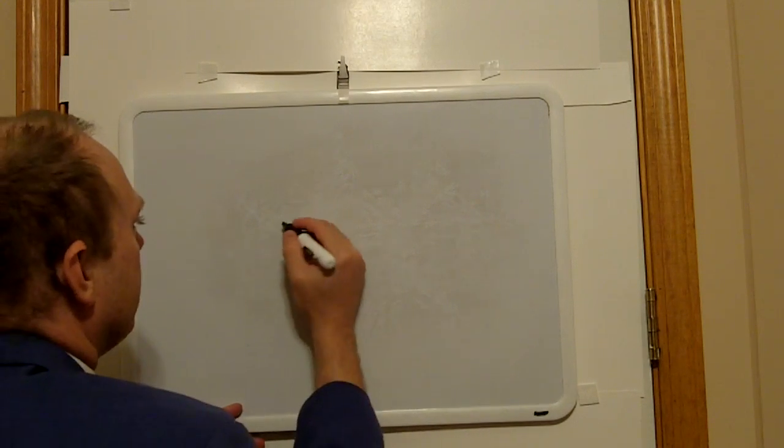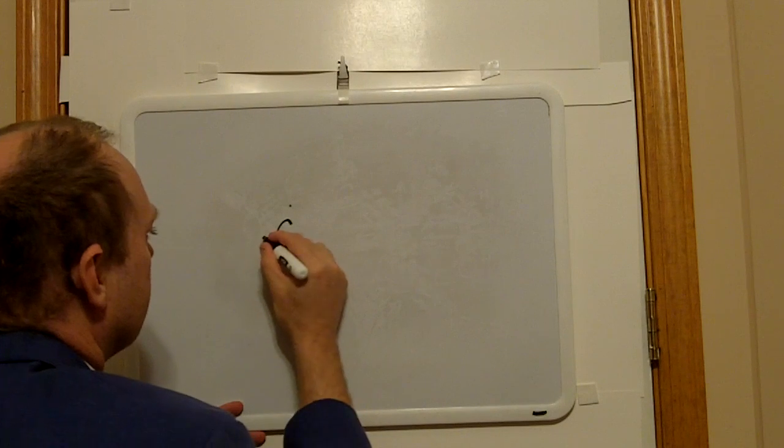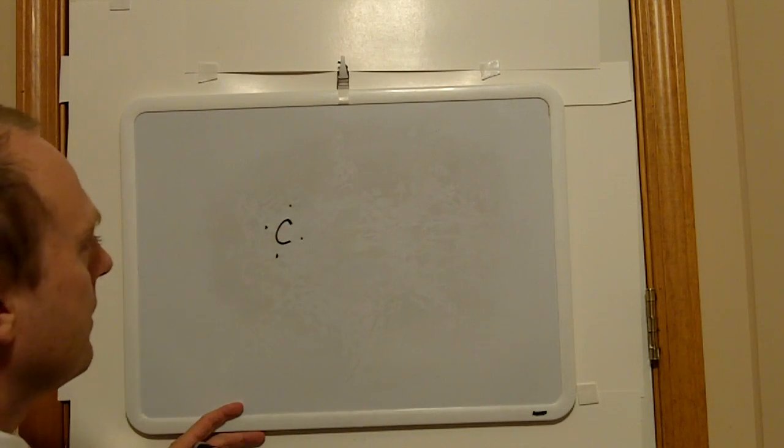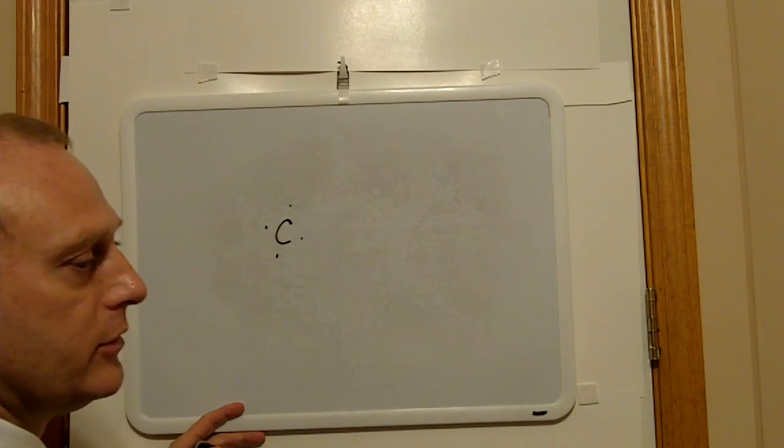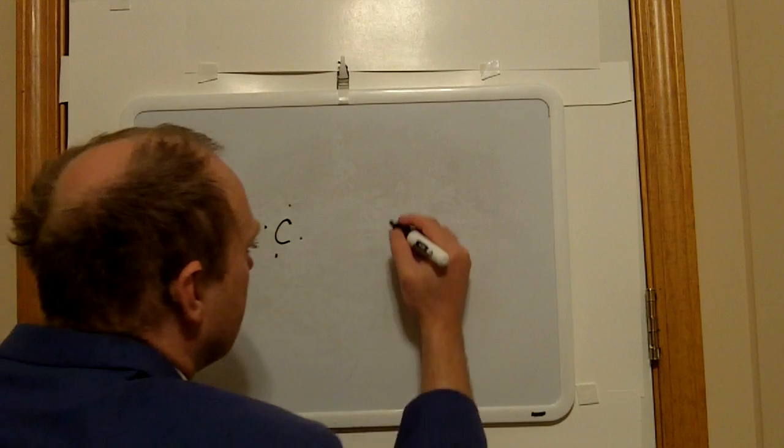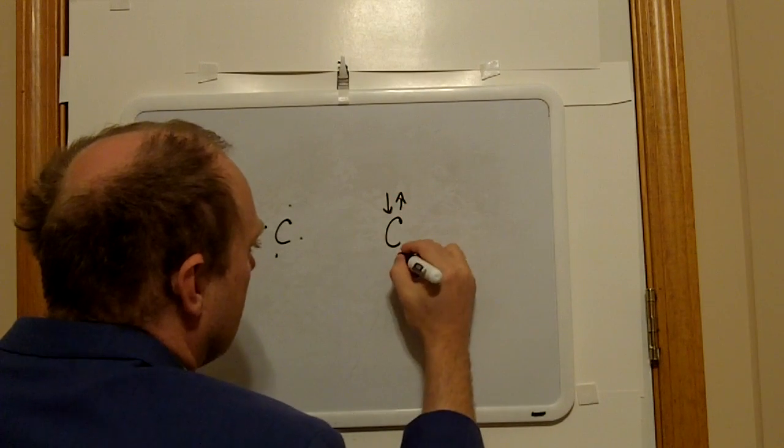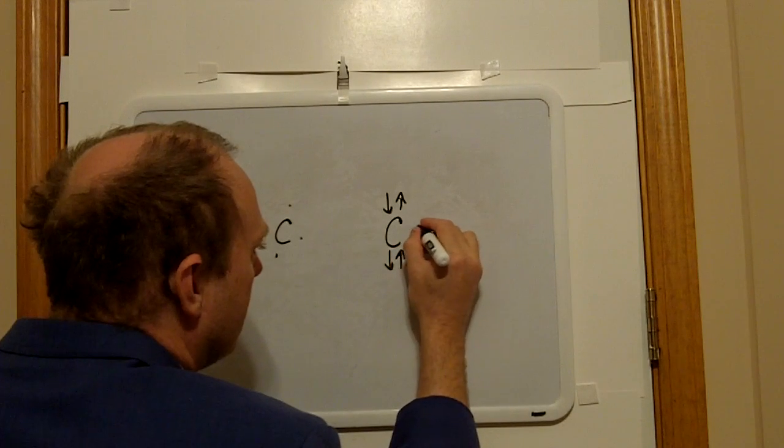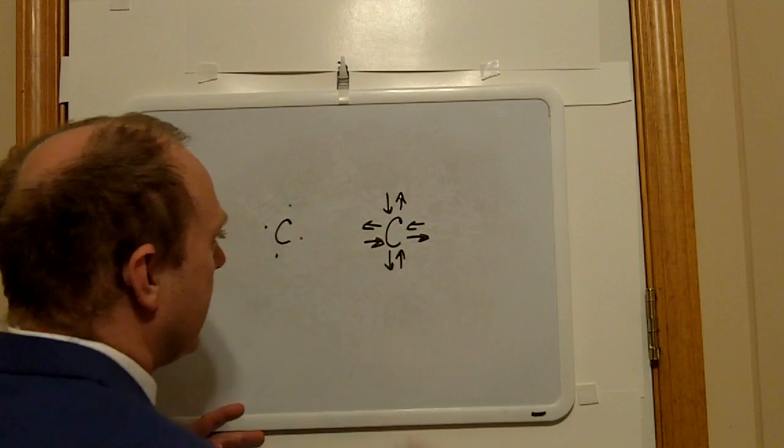Lewis structures represent carbon this way, with an electron dot diagram showing four electrons. The gravitational unit theory, unified field theory, way of representing carbon is through vector bonding, which shows far more detail in the atom.